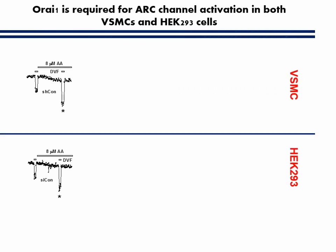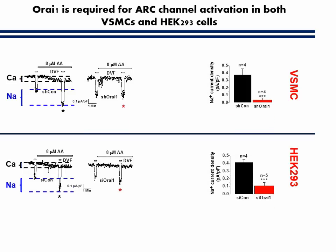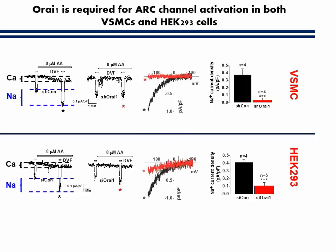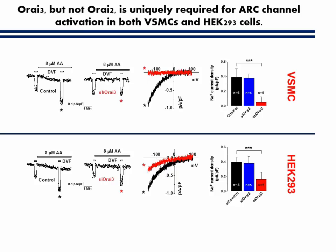To answer the first question, we decided to compare side-by-side arachidonic acid activated currents in smooth muscle cells and HEK cells. 8-micromolar arachidonic acid activated an inward calcium current in both cell types. This is the calcium current, and this is the sodium current recorded in divalent-free bath solution. Upon ORI-1 knockdown, R currents are essentially abolished in both cell types. These are representative IV curves for sodium currents. Similarly, upon ORI-3 knockdown, R currents are essentially abrogated in both cell types. However, ORI-2 knockdown had no effect on R currents. Statistics are shown here.